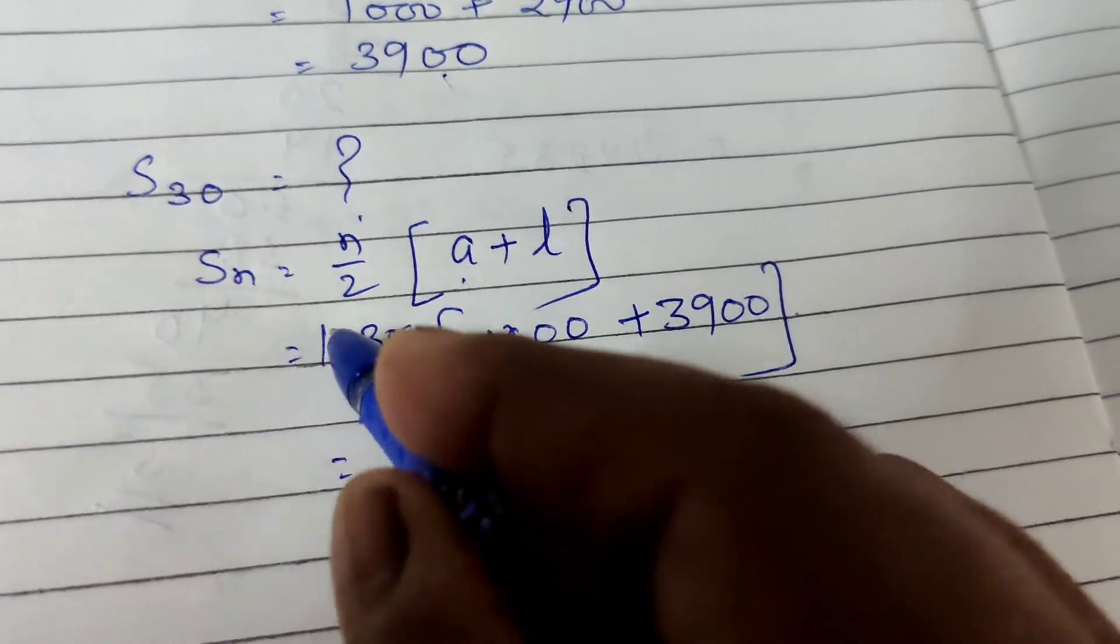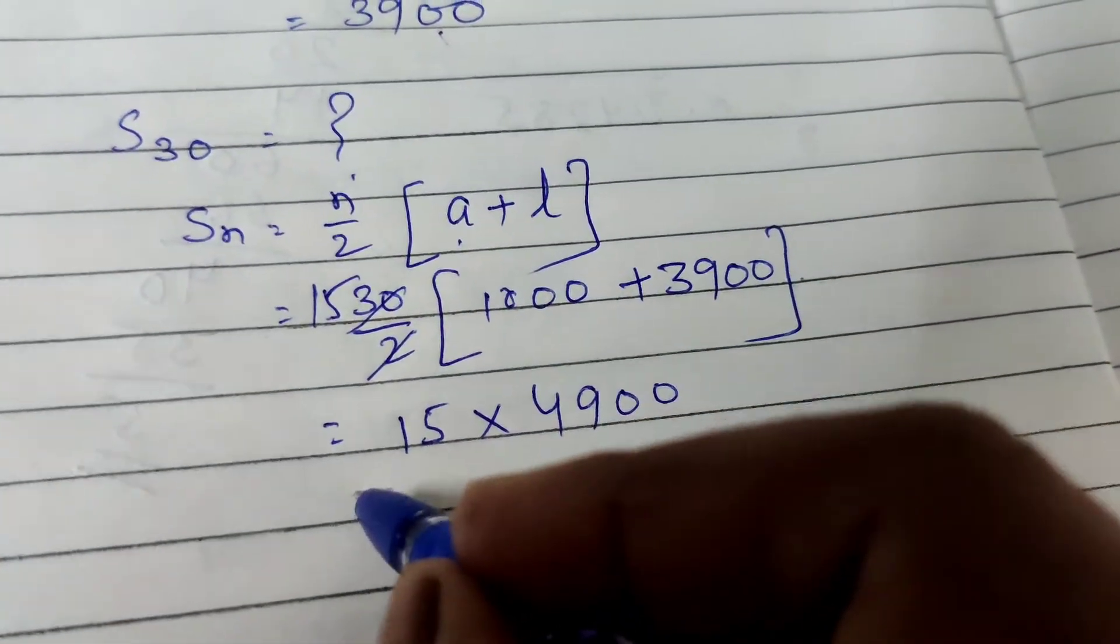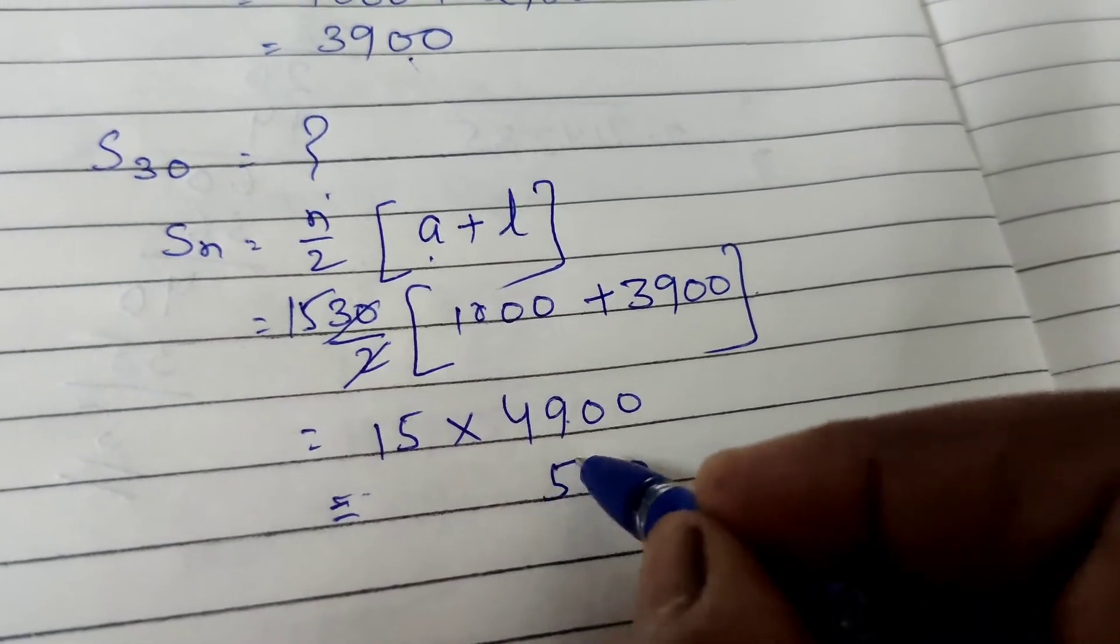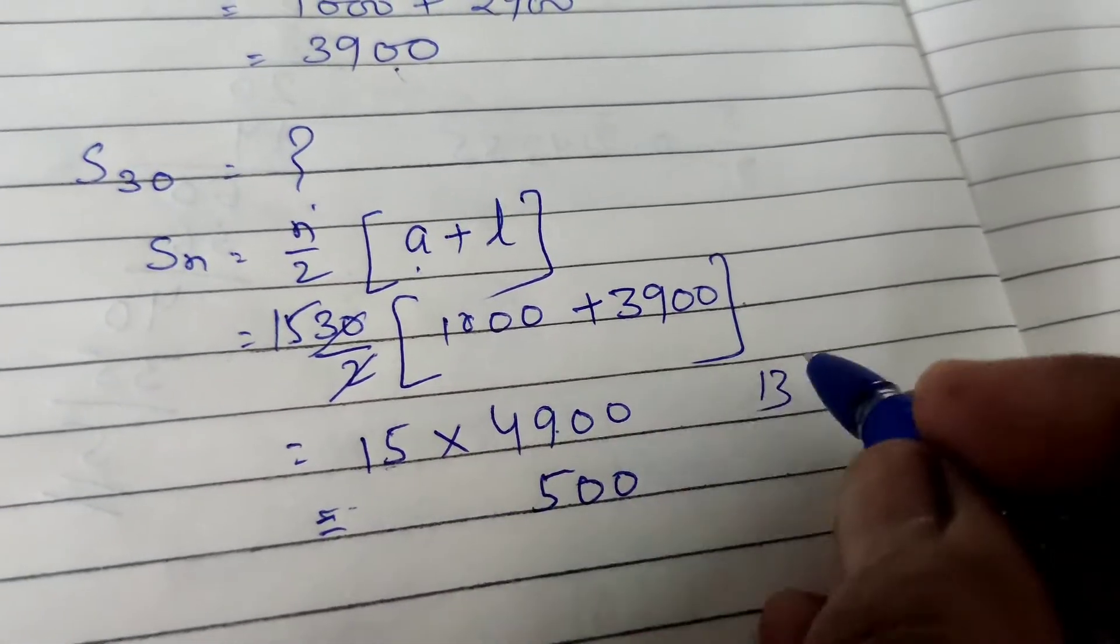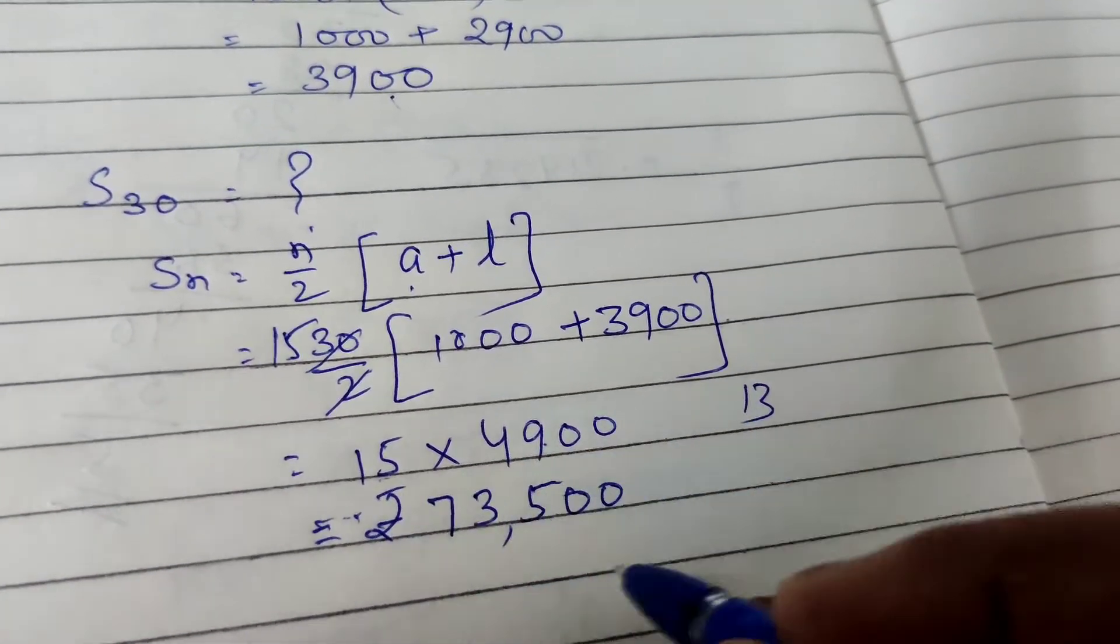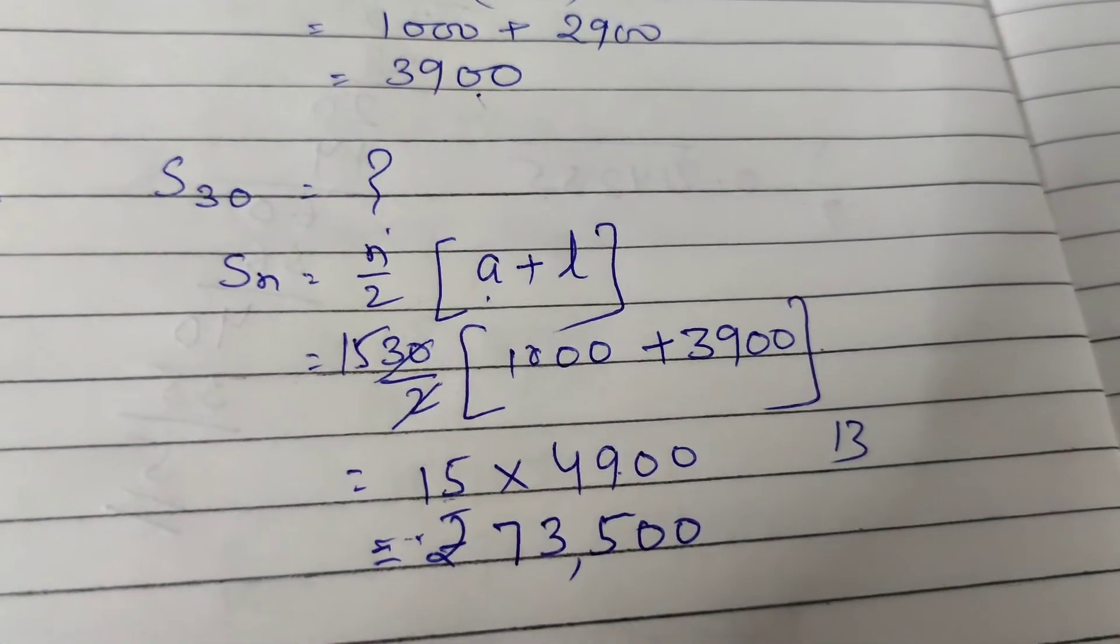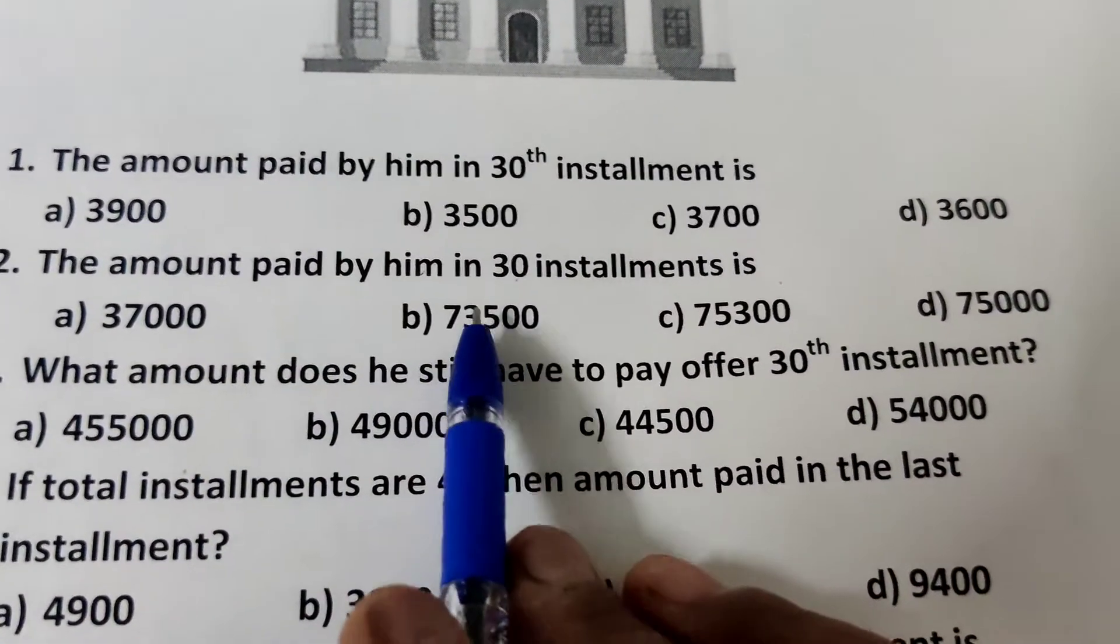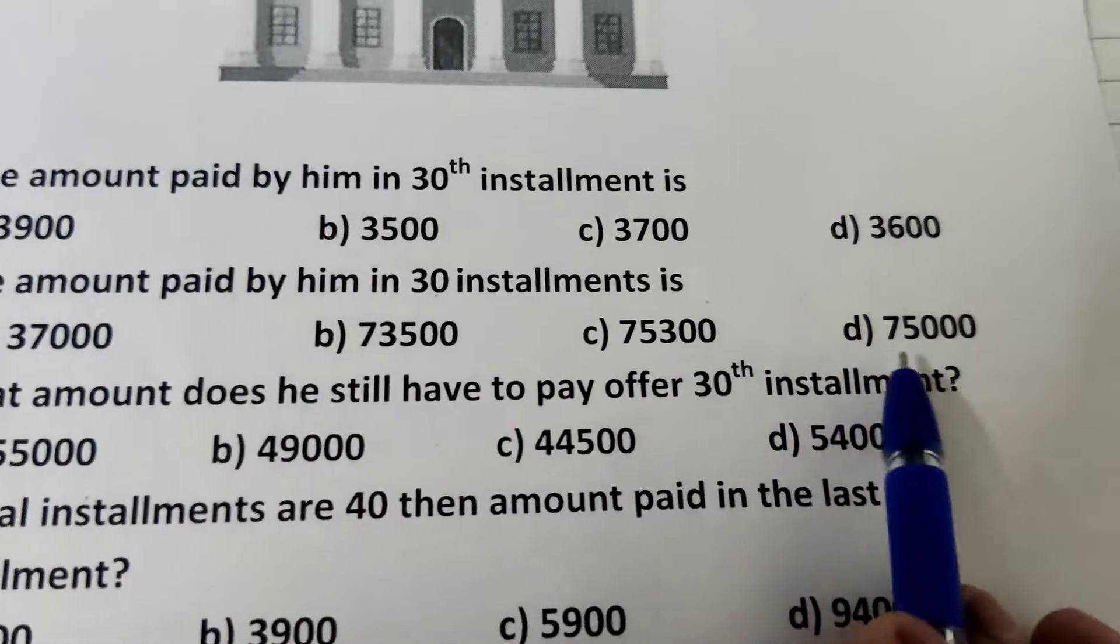Multiply by 15. 15 nines, 135, 13 carry, 15 into 4, 60 plus 13 is 73. It is equal to rupees 73,500. The right option is 73,500.